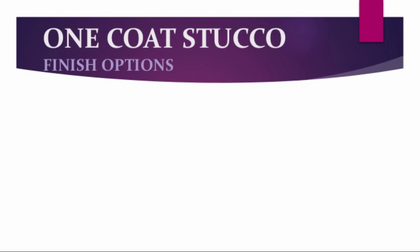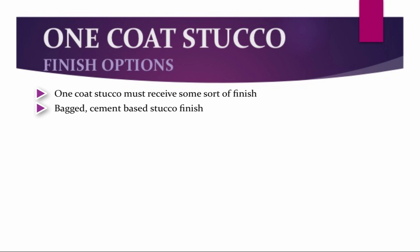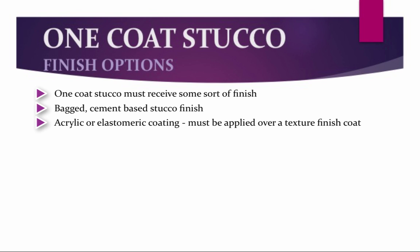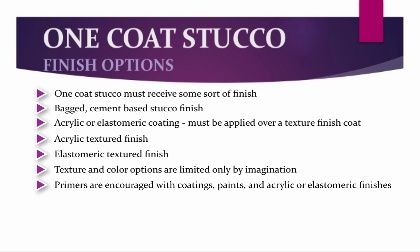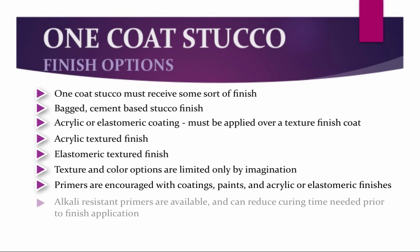There are many finish options available for one-coat stucco; however, one-coat stucco must receive some sort of finish. This could be a bagged cement-based stucco finish, either colored or gray to be painted by others. Acrylic or elastomeric coatings must be applied over some sort of textured finish coat — either a bagged cement-based finish or hand texturing with the same one-coat material. Acrylic and elastomeric textured finishes are also valuable options. Texture and color options are limited only by the imagination of the designer. Primers are encouraged with coatings, paints, and acrylic or elastomeric finishes. Alkali-resistant primers are available and can reduce curing time needed prior to application of a finish or coating.